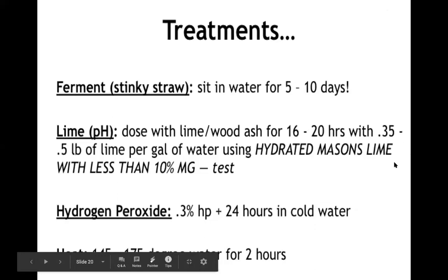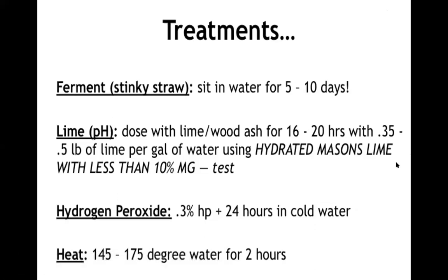With lime, most common is hydrated mason's lime with less than 10% magnesium content — depending on your local suppliers that can be easy or difficult to find. Wood ash can also be used but at a much higher amount, so most commercial growers prefer lime because a very small amount achieves the desired effect: raising the pH of the water to at least 10. Hydrogen peroxide is another option with a whole guidebook series online, though it's less common. Most common overall is heat pasteurization at generally 140–180°F for two hours.